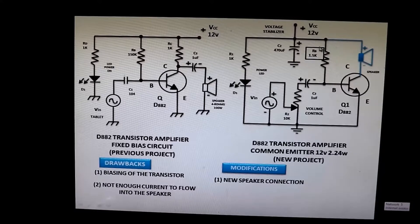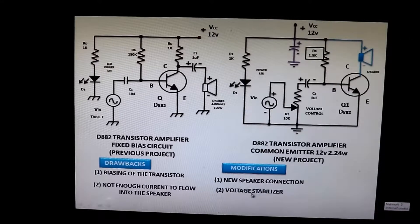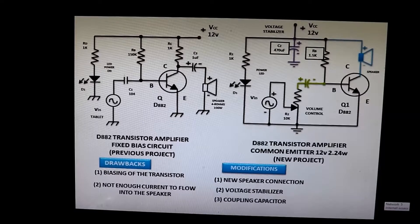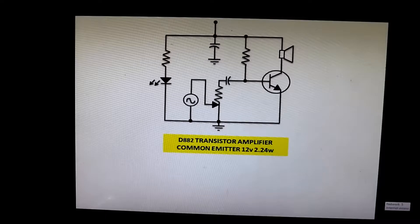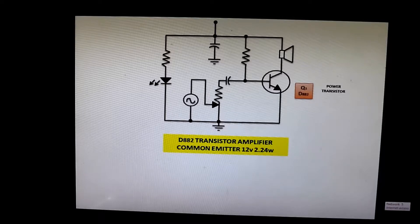Because of that, we get a new value of base resistor — 1.5 kilo ohms. We also have a voltage stabilizer C2 of 470 microfarad to minimize humming, a new coupling capacitor of 1 microfarad, and a 10 kilo ohm potentiometer for volume control. For our new project we are using the D882, which is a power transistor at the output stage — it is an NPN type.